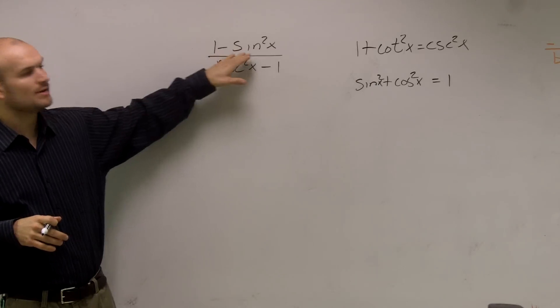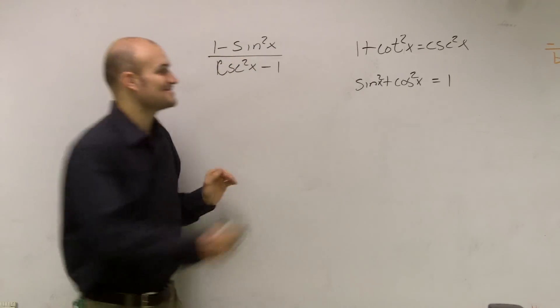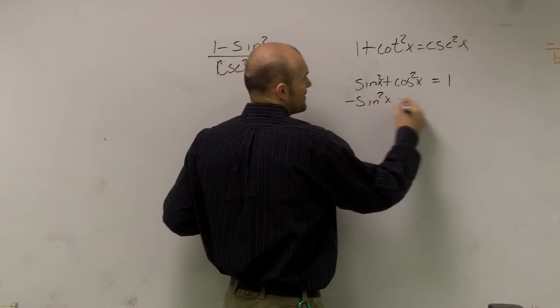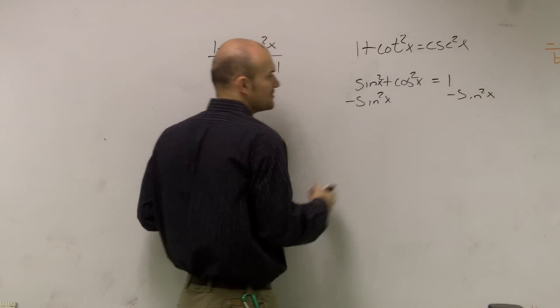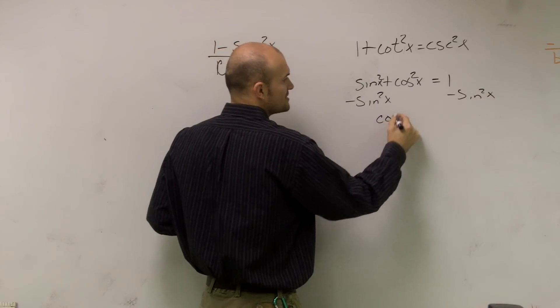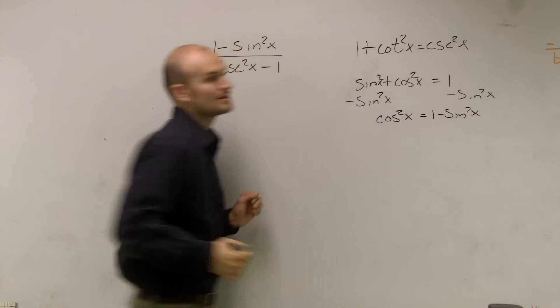To put this as 1 minus sine squared, I'm obviously going to have to get this negative sine, okay? So what I'll do is I'll subtract the sine squared of x on both sides. And therefore what I will see is cosine squared of x equals 1 minus sine squared of x. Make sense?